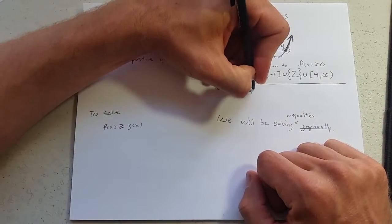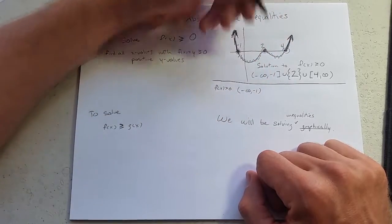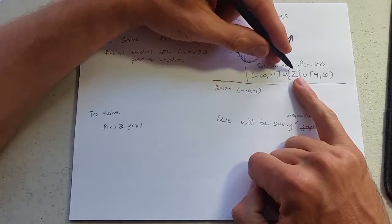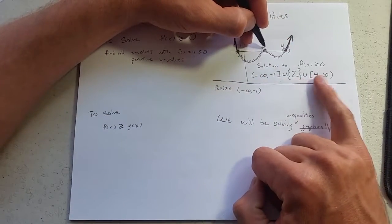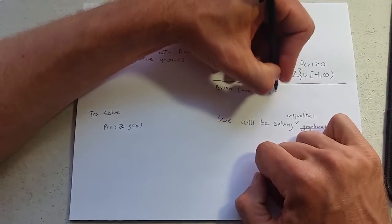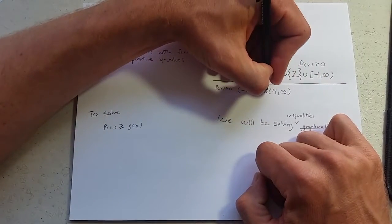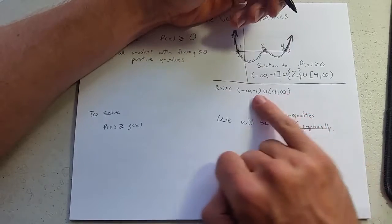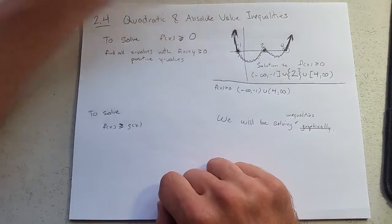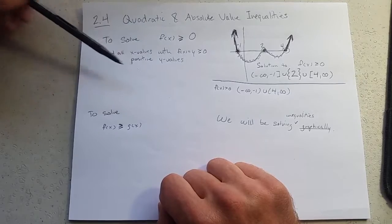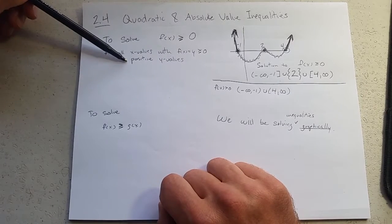Our solution would be negative infinity, negative 1. We would skip negative 1, completely skip 2, and also skip 4. So our intervals would become open on both ends if we had only greater than 0. So these are all the x values with positive y values.